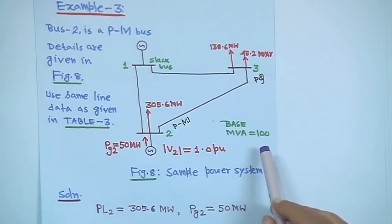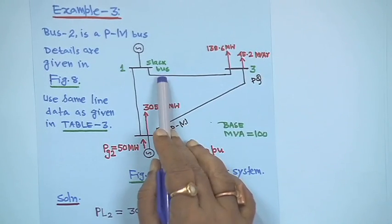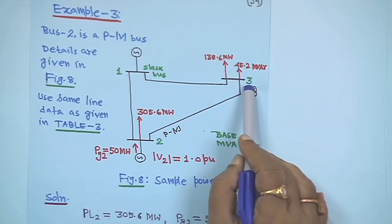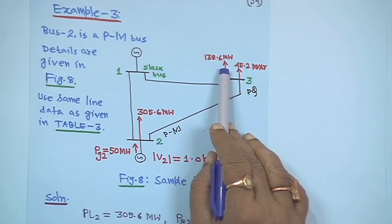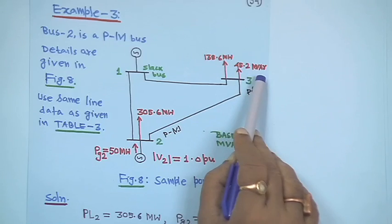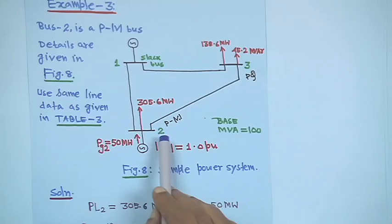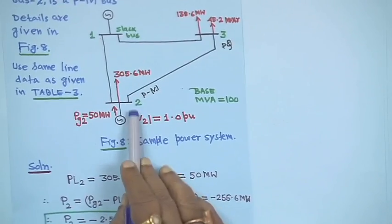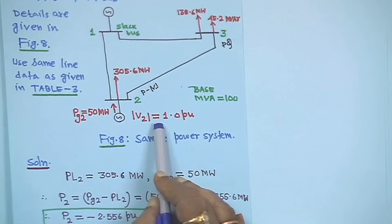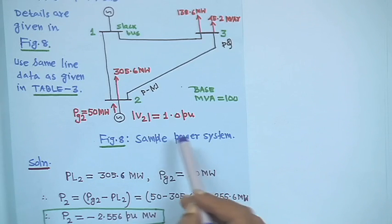The next example uses the same data except that bus 3 is a slack bus, and bus 3 is a PQ bus with the same load: 138.6 megawatt real load and 45.2 megawatt reactive load. Bus 2 is a PV bus, so voltage magnitude and real power are specified. The voltage magnitude V₂ is specified at 1.0 per unit.